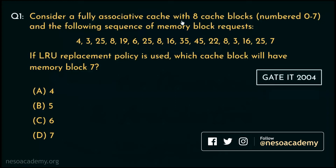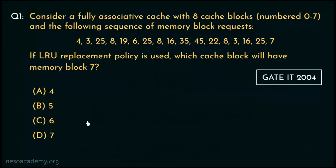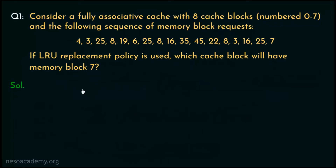Consider this question — it came in the GATE Information Technology 2004 paper. Consider a fully associative cache with eight cache blocks numbered 0 to 7 and the following sequence of memory block requests. If the Least Recently Used replacement policy is used, which cache block will have memory block number 7? These are the options provided.